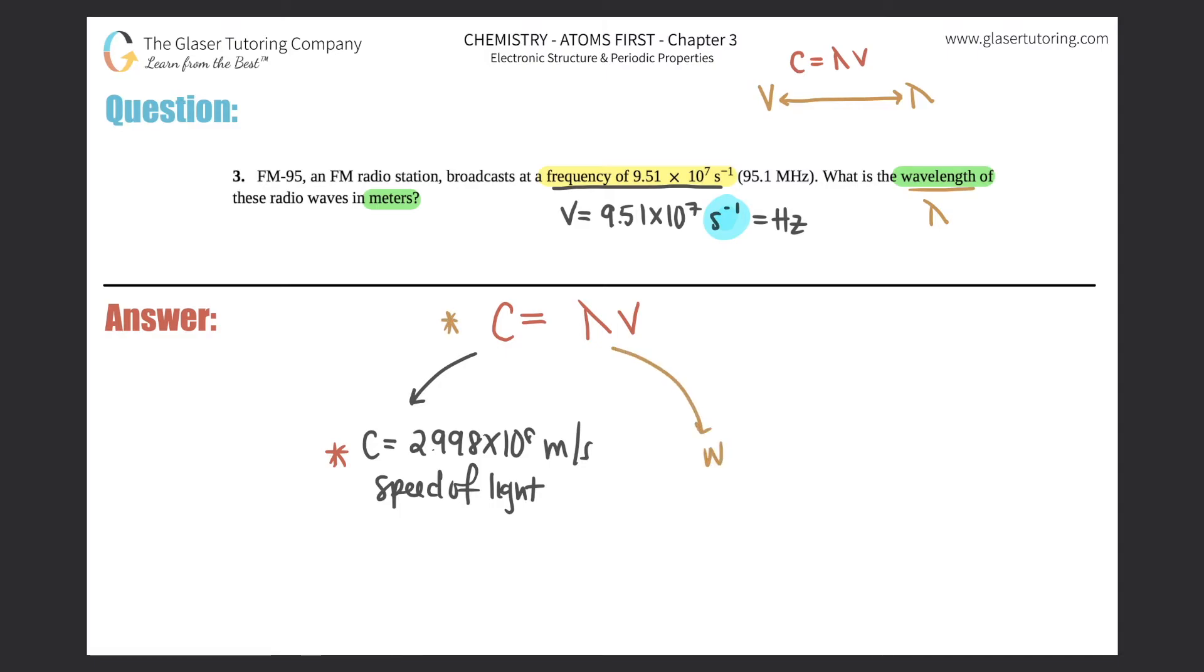Lambda is your wavelength. If you're using this formula, it has to be in meters because the speed of light is in meters. So the distance unit has to be the same. And this is frequency. This is in per second or Hertz because they're exactly the same thing.